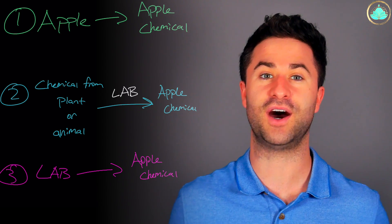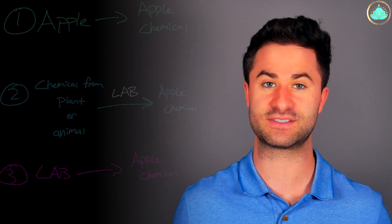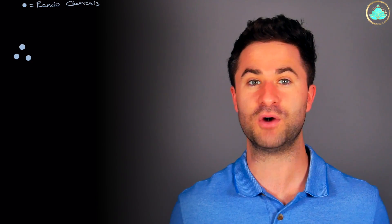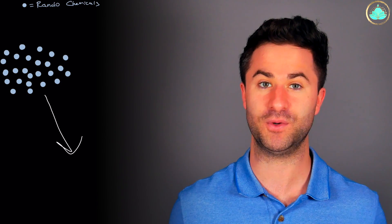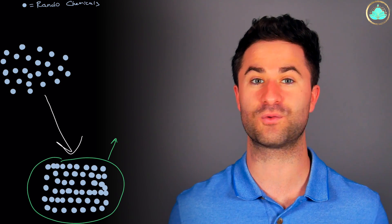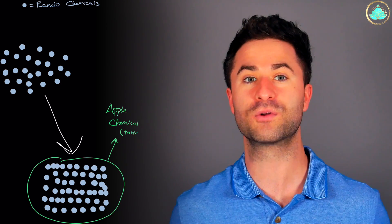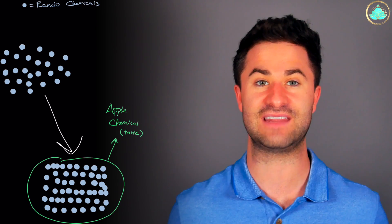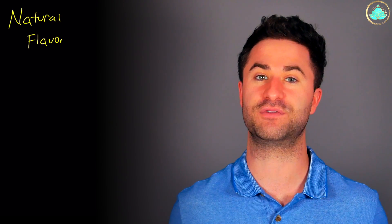It's also important to understand that in order to get any chemical for flavoring purposes, if it doesn't come from the thing itself — so back to our example, if you're trying to get something to taste like an apple but don't actually use an apple to do it — it takes dozens, if not hundreds of chemicals in the right combination in order to replicate this apple taste. This is where the terms natural and artificial flavors come in.